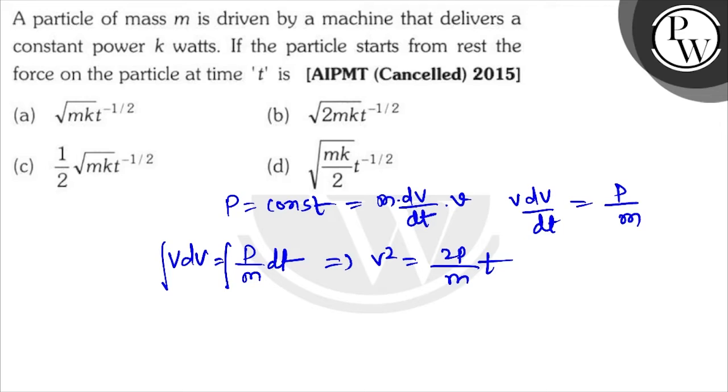Force on the particle at time t: velocity is equal to square root of 2P by m into t to the power half.